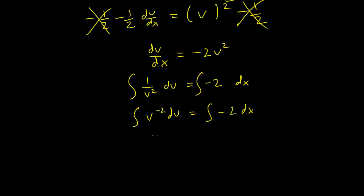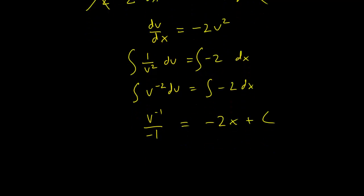So we can use the exponent rule for integration. We have v^(-1) over minus 1 equals, and this is just going to be minus 2x plus c.